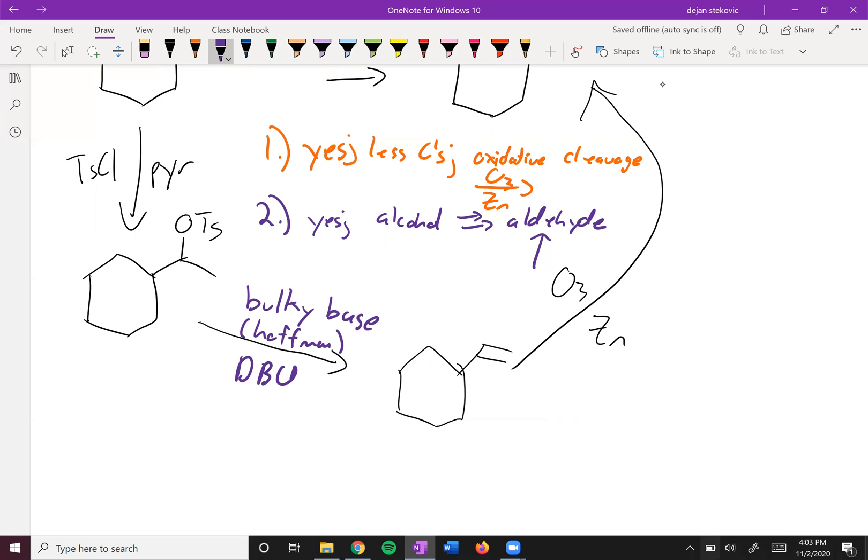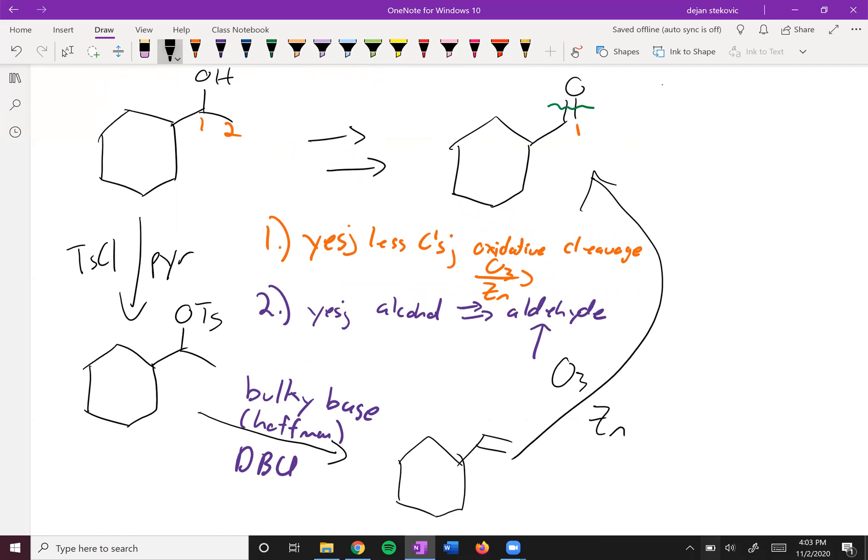Something like DBU. So you can see how you can analyze these things by asking some simple questions and then working backwards, but also working forwards and trying to meet somewhere in the middle.